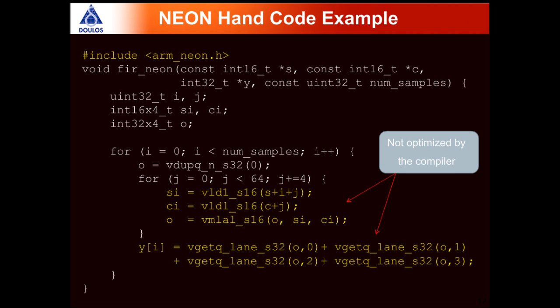In the intrinsics-based example, we start by including arm_neon.h, which contains both useful data types for Neon operations and the intrinsics themselves. The function declaration is similar to before, but the internal variables differ: we declare SI and CI as arrays of 16-by-4 integer values, and O as an array of 32-by-4 values. These will be used by our Neon intrinsic operations.